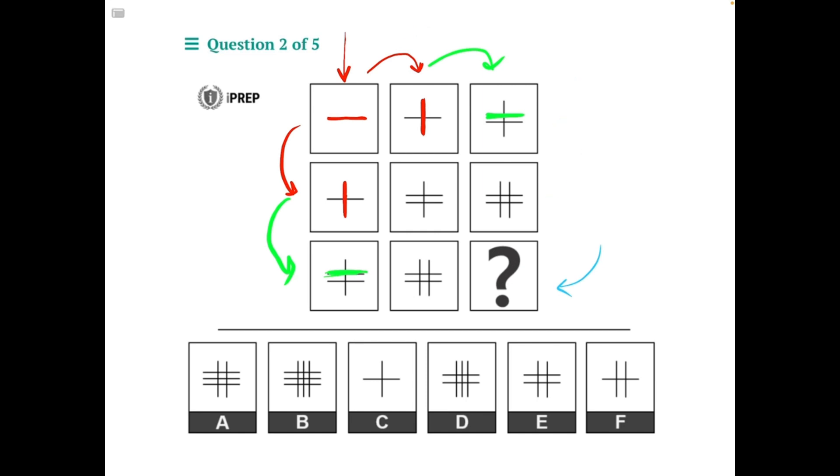So if we take one step to the right we would add a vertical line, and then we would add a horizontal line. Then we would add another vertical line, and then our final step would be to add a horizontal line.